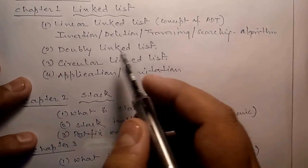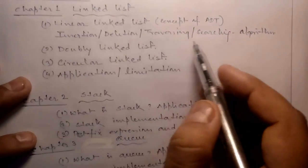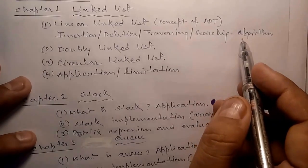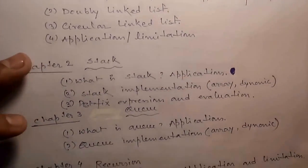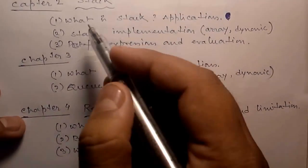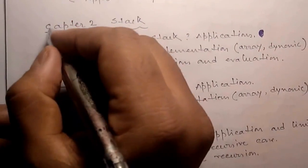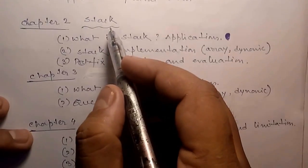We will discuss doubly linked list, circular linked list, applications and limitations of linked list. In Chapter 2, we will talk about stack memory: what is stack, application of stack, implementation using array and dynamic memory allocation, circular memory, postfix expression and evaluation.